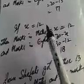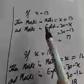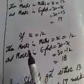Taking the second value: if x equals 12, then marks in Mathematics are 12. Marks in English are 30 minus x, which is 30 minus 12, equal to 18. In both cases, the sum of marks is 30. So either she scored 12 in Mathematics and 18 in English.